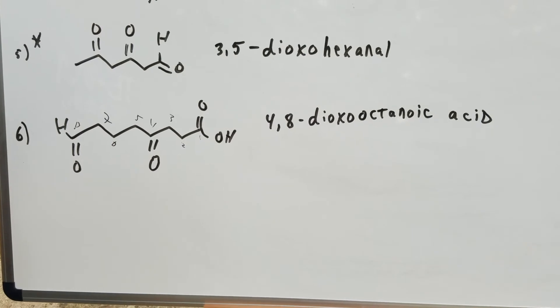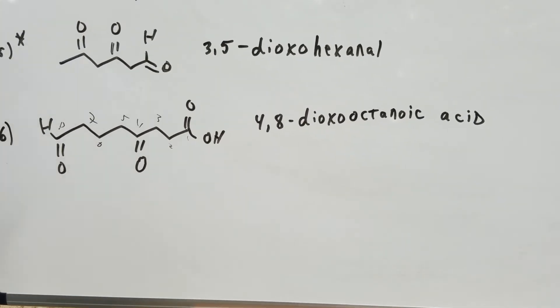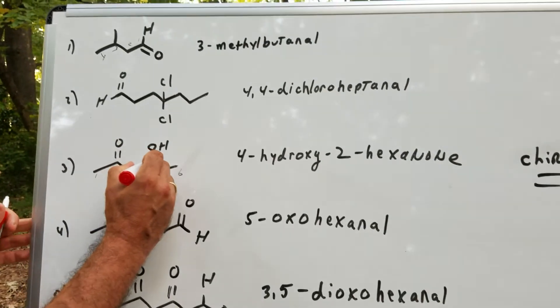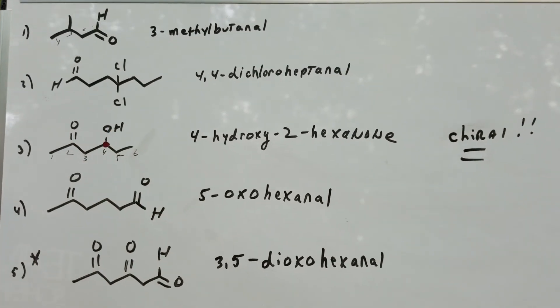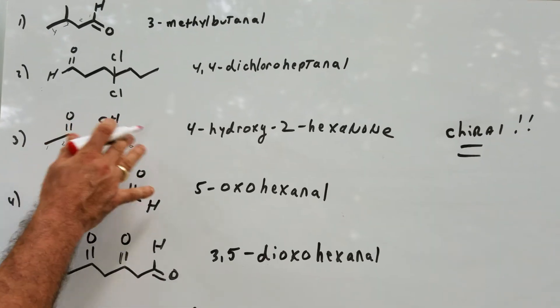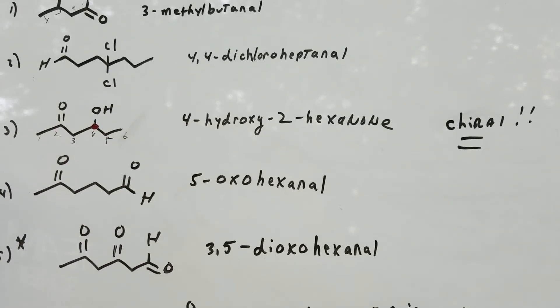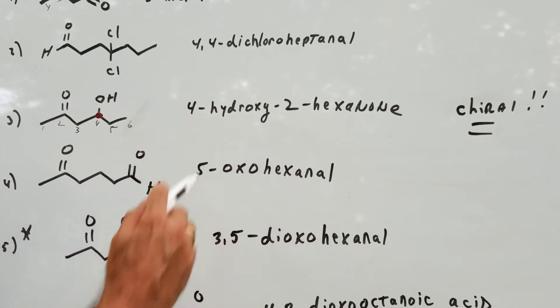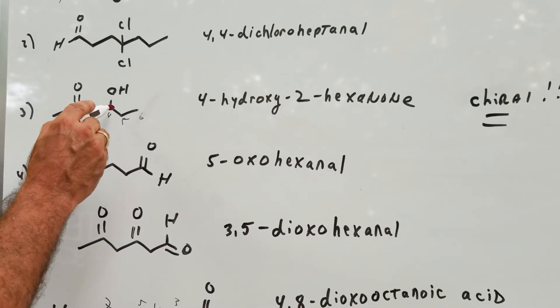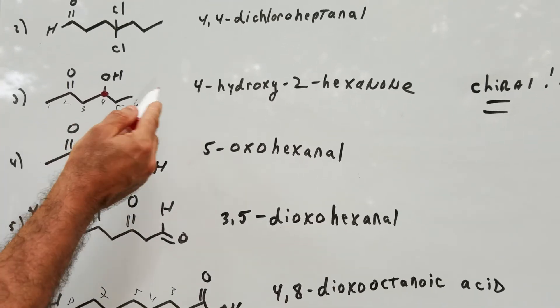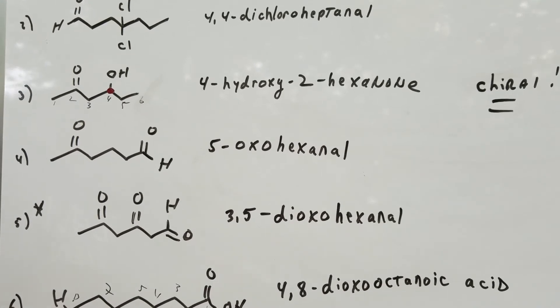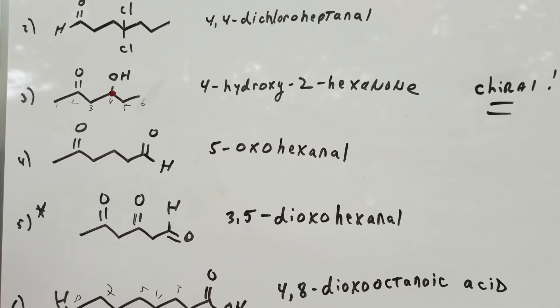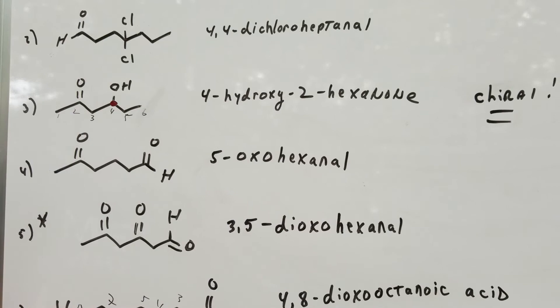Therefore we would get 4,8-dioxooctanoic acid. Oh, and by the way, number three: if you notice at position number four there's a chiral center. So if you want to buy this molecule, if you order it from a chemical company, it wouldn't be enough to say I want 4-hydroxy-2-hexanone because there's chirality at number four. So that would mean there would be an R and an S, but that's another lecture when we talk about stereochemistry.